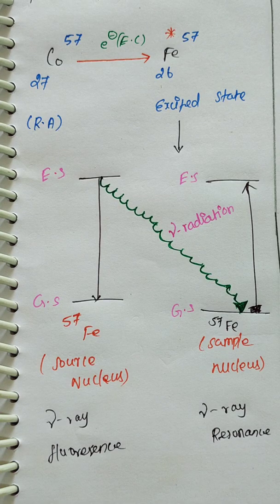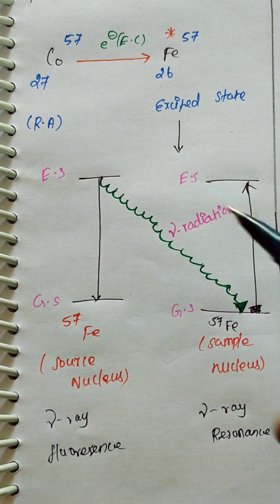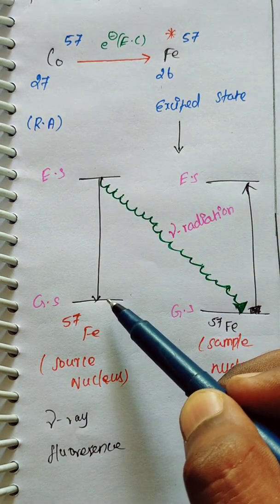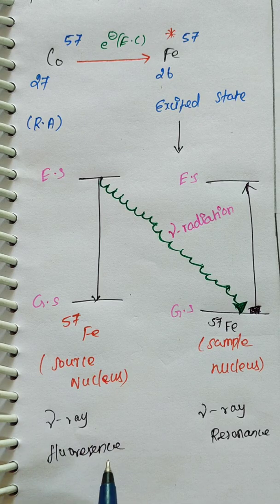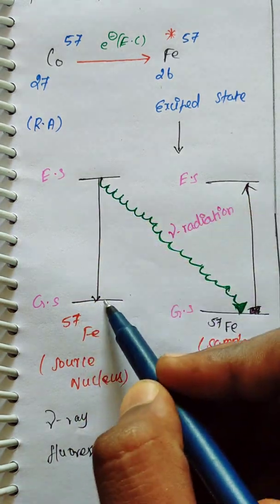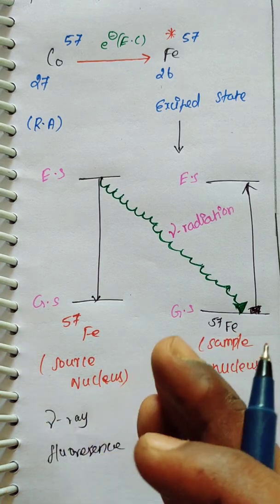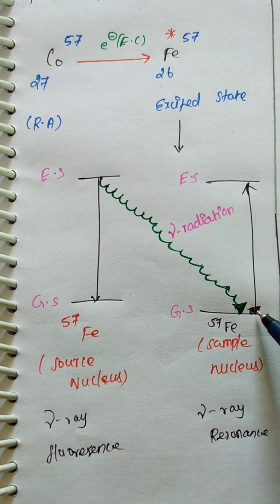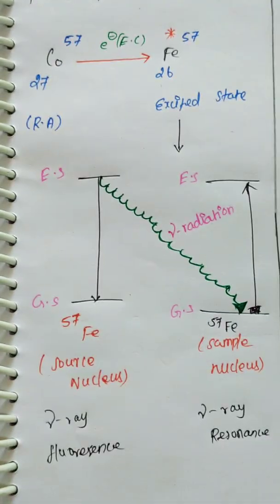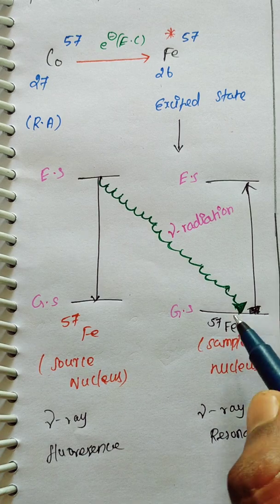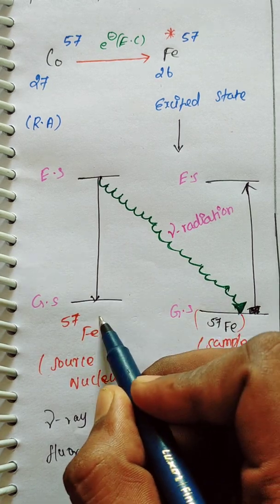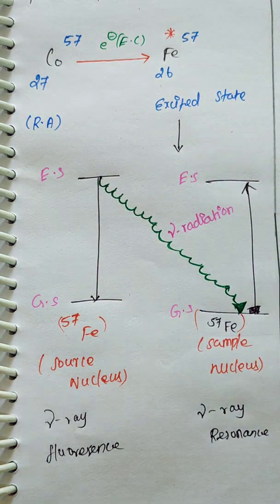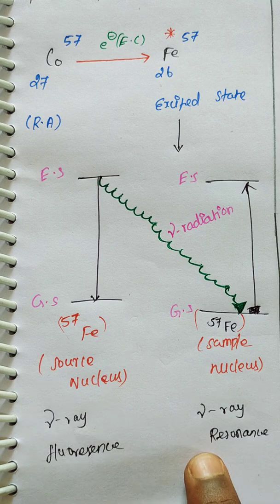We can find out the character of the sample. Iron transitions from excited state to ground state — this is called gamma ray fluorescence. This is the source nucleus. The sample then undergoes excitation again — this is the sample nucleus. This process involves gamma ray fluorescence and gamma ray resonance.